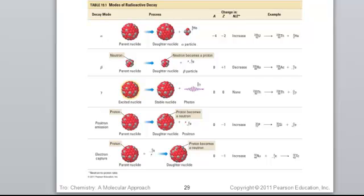Alpha and beta, positron and electron capture change the identity of an element. Gamma does not.